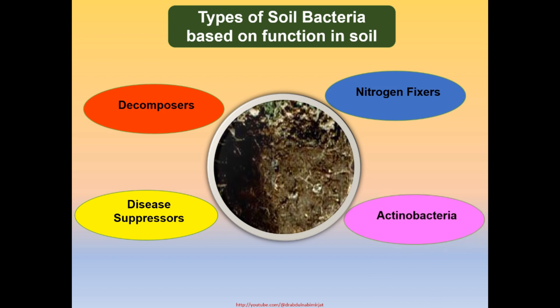Actinobacteria slowly break down humic acids in soil. These bacteria prefer non-acid soils with a pH greater than 5. Sulphur oxidizers convert sulfides into sulfates used by plants. Examples of sulphur oxidizers include Thiobacillus bacteria.